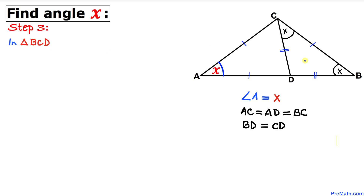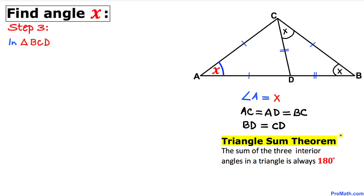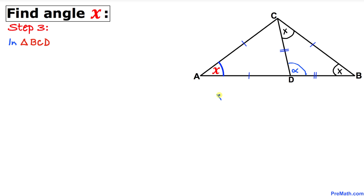Let's focus on triangle BCD and recall the triangle sum theorem: the sum of all three interior angles in a triangle is always 180 degrees. Let me call the third angle alpha. Then X plus X plus alpha must equal 180 degrees, giving us 2X plus alpha equals 180 degrees.